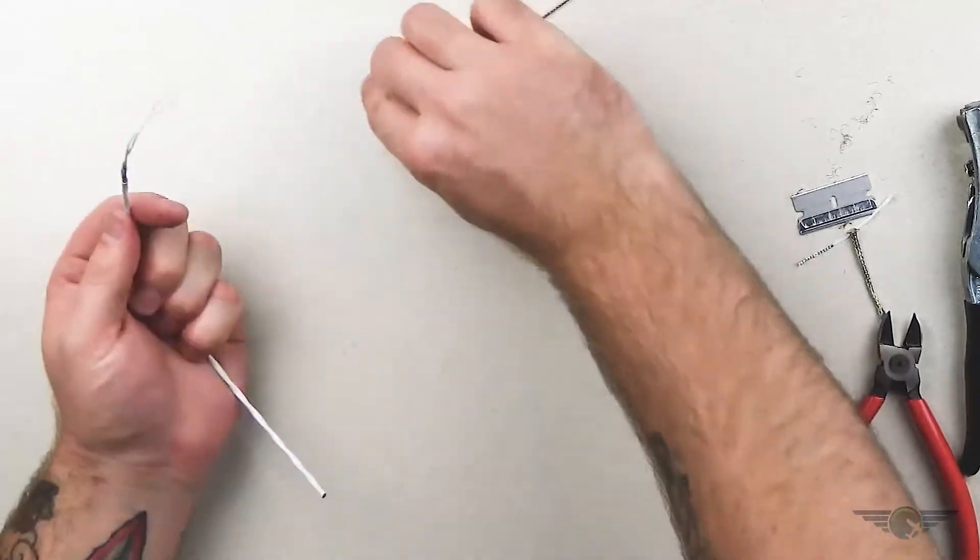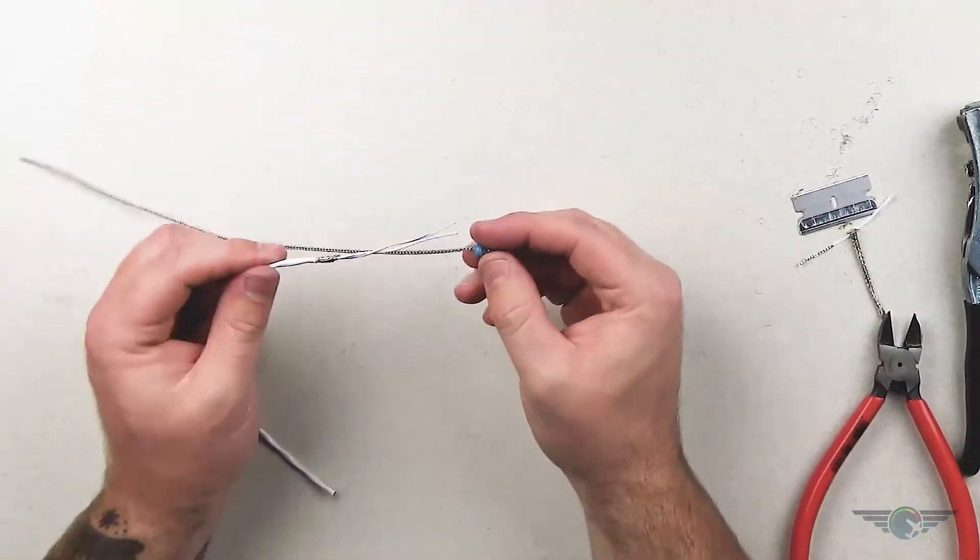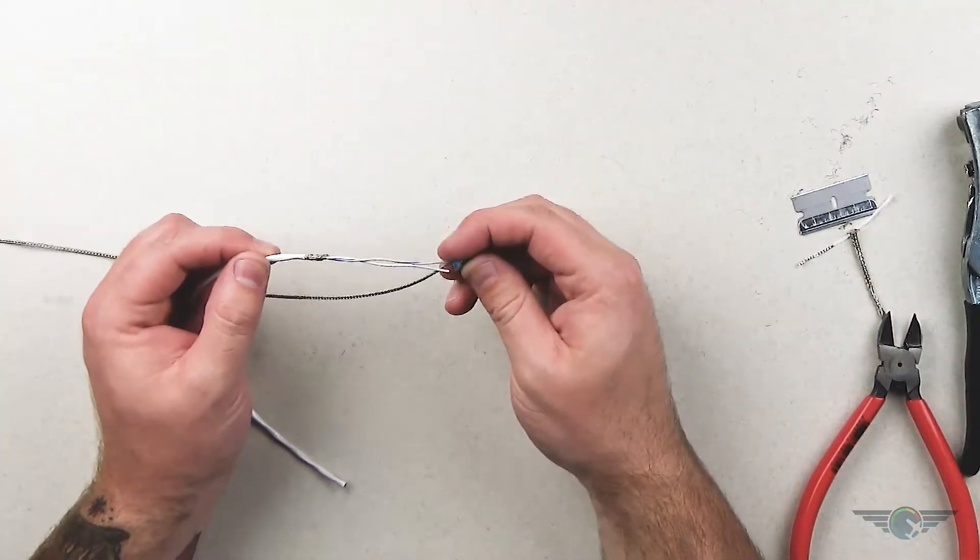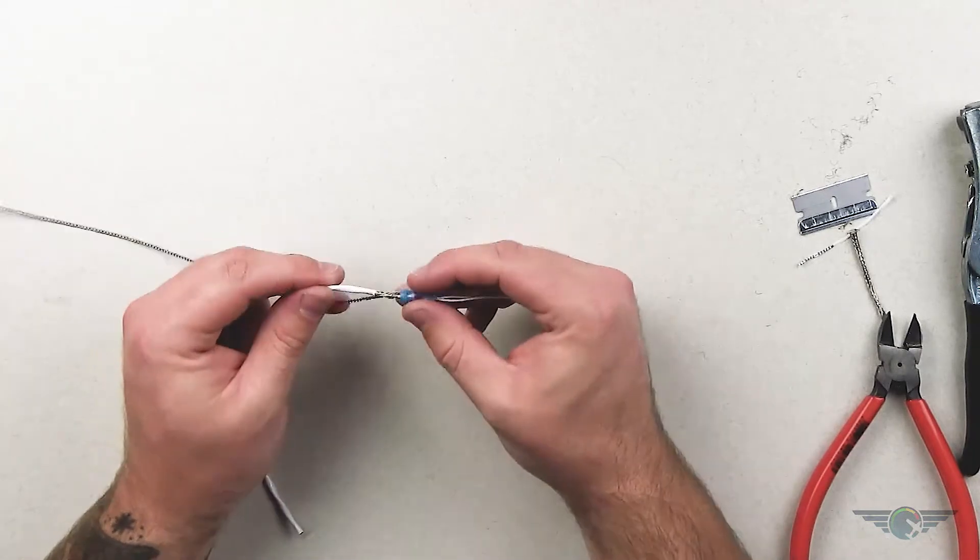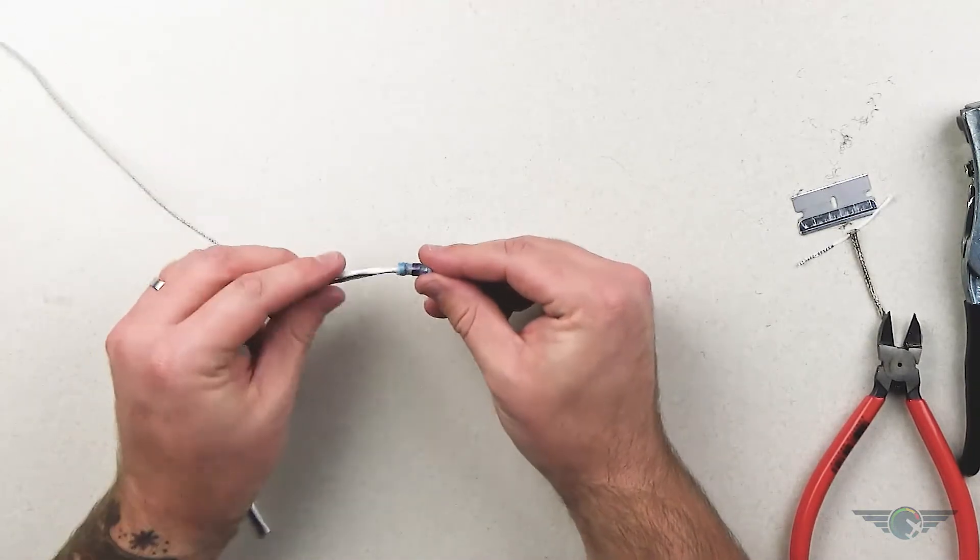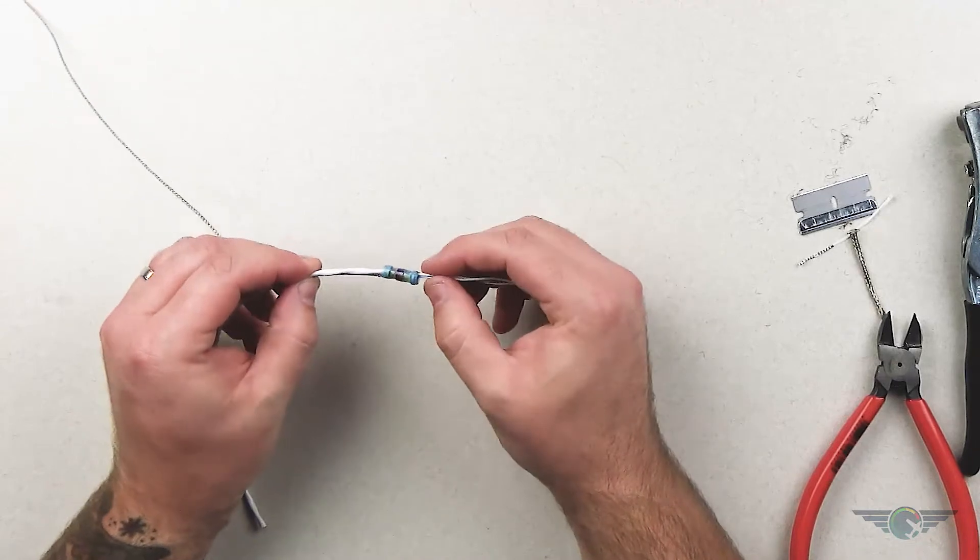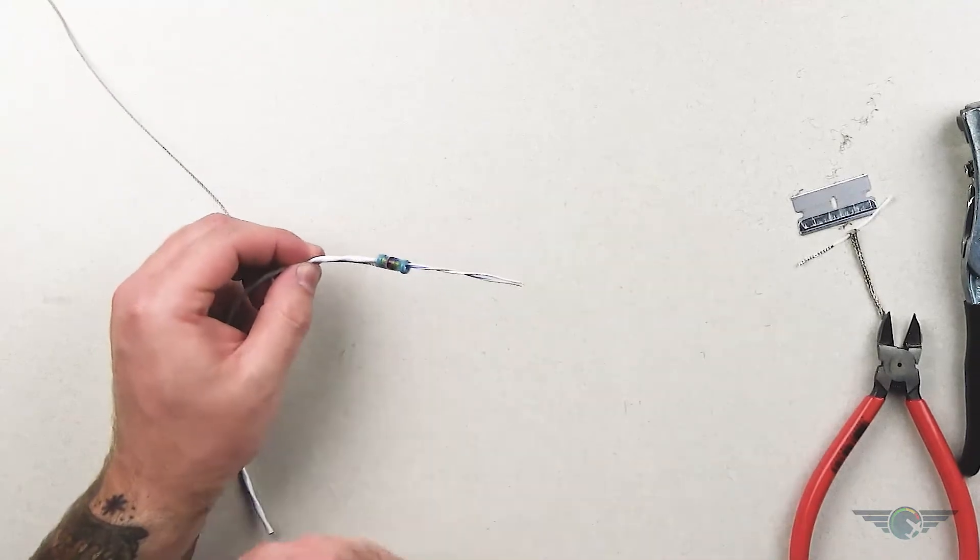Now we're going to take our solder sleeve, and same as we did with the heat shrink before, we'll put that solder sleeve on there. I can hold it by that braid and it'll stay in place.